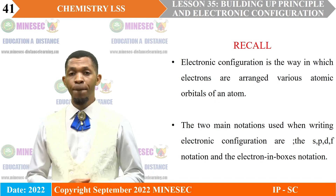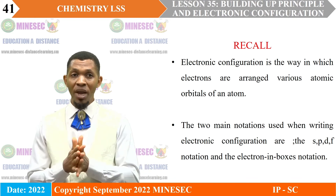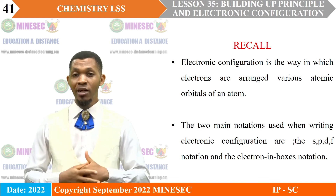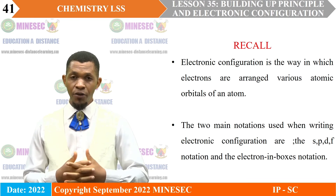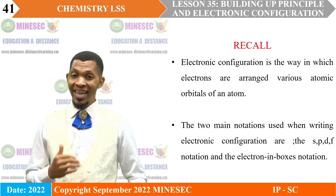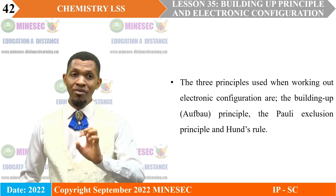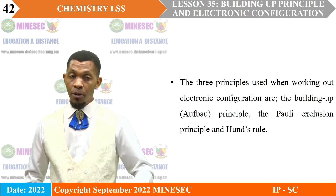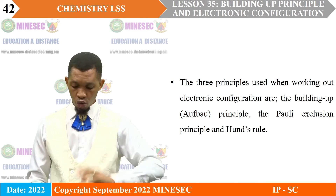Recall: Electronic configuration is the way in which electrons are arranged in the various atomic orbitals of an atom. The two main notations used when writing electronic configuration are the SPDF notation and the electron-in-boxes notation. The three principles used when working out electronic configuration are the building up (Aufbau) principle, the Pauli exclusion principle, and Hund's rule.